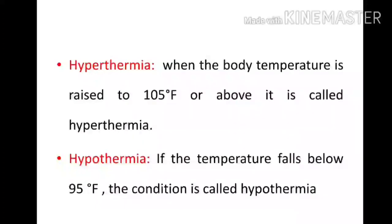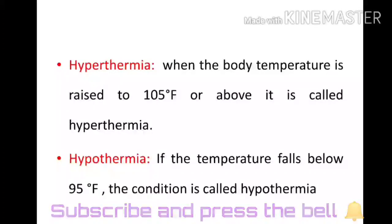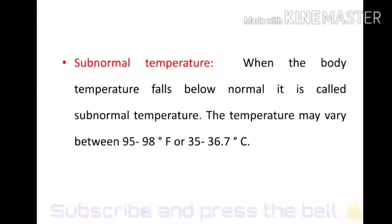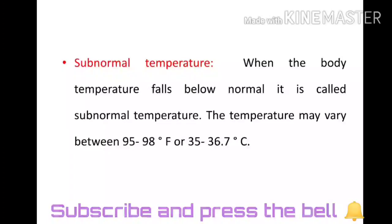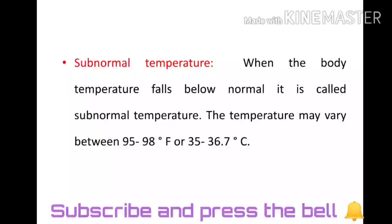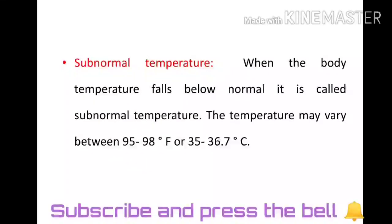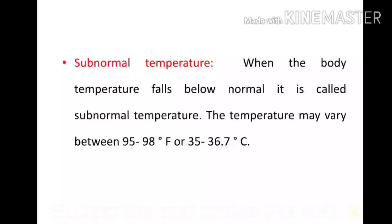These are the different types of fever discussed: constant fever, remittent fever, intermittent fever, inverse fever, relapsing fever, irregular fever, hectic or swinging fever, rigor, and the pyrexia classifications — low, moderate, high, and hyperpyrexia — as well as hyperthermia and hypothermia. Subnormal temperature is when the body temperature falls below normal, typically below 95 to 98 degrees Fahrenheit or 35 to 36.7 degrees Celsius.